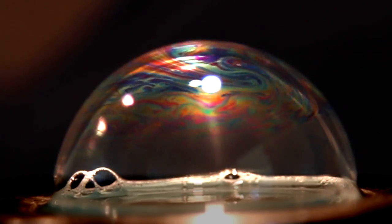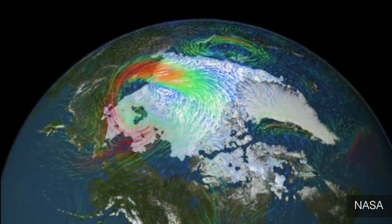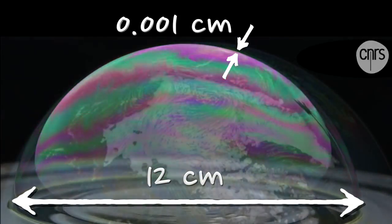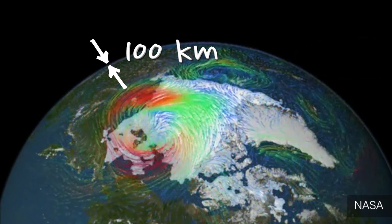Scientists sometimes use bubbles as models for the atmosphere because they're very thin, almost flat as compared to the sphere they enclose, just like an atmosphere is thin compared to its planet.